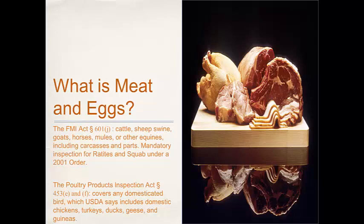It surprises some people to see that horses are included — that's something that's been in the news recently, with horse production being brought back online. A 2001 order also brought into that definition emu and some other large birds — these ratites — and squab. But that is generally what we mean when we talk about meat, and we'll get into more refinement in the slides that follow.